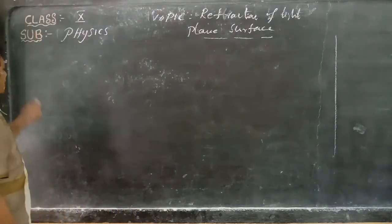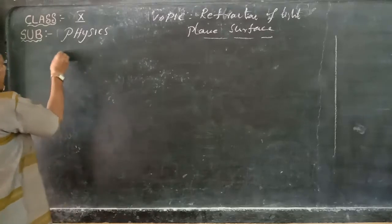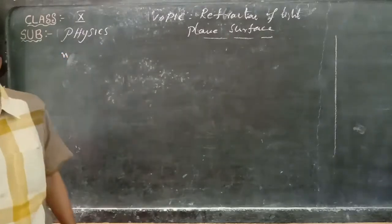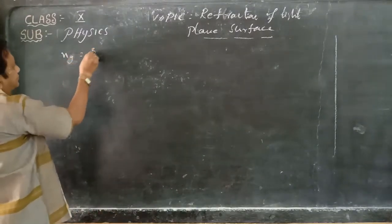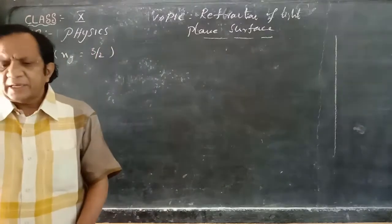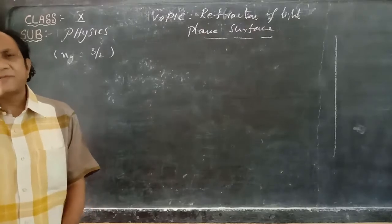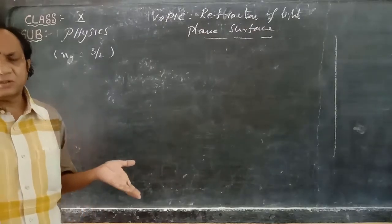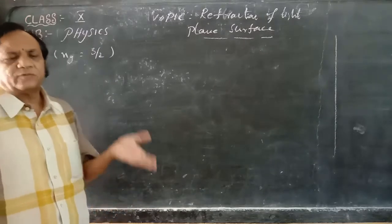Here, the refractive index of glass is given as 3 by 2. Now, first of all, we have to calculate the R value. In parallel surfaces, both angles must be equal. So we only need to calculate one value; the other will be the same.